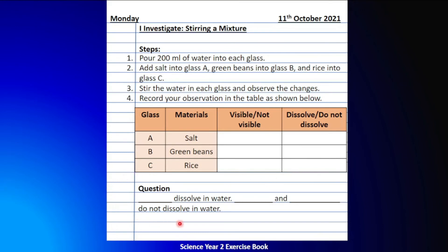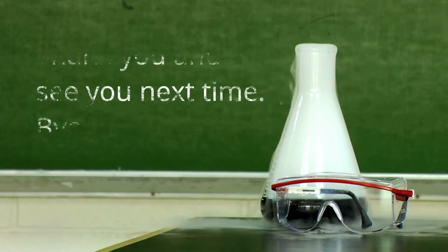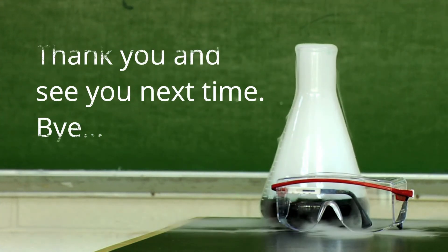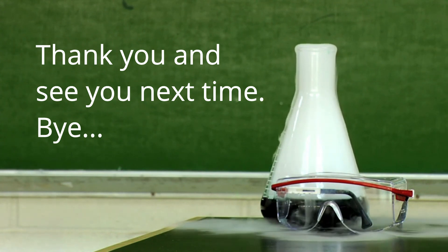Complete the sentences: 'Blank dissolved in the water. Blank and blank do not dissolve in the water.' So, what material dissolved in the water? And what are the two materials that do not dissolve in the water? I think you should know the answer by now. Please copy all of this in your Science C2 exercise book and write it neatly — you might need this information in your next activity. Good luck, everyone! That's about it for today's lesson. I hope to see you in the next video. Till then, take care and bye-bye!